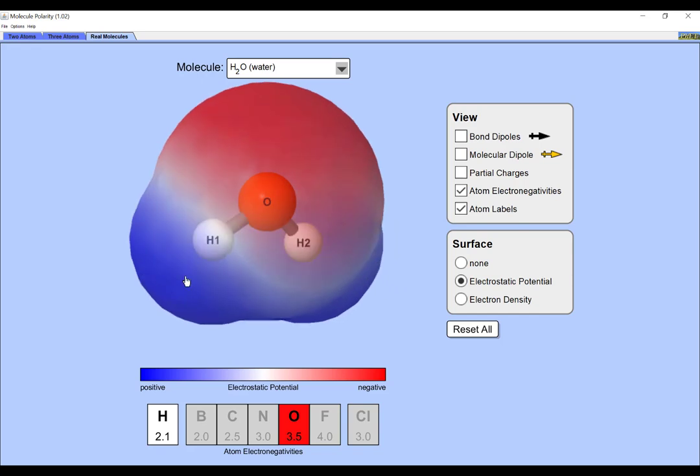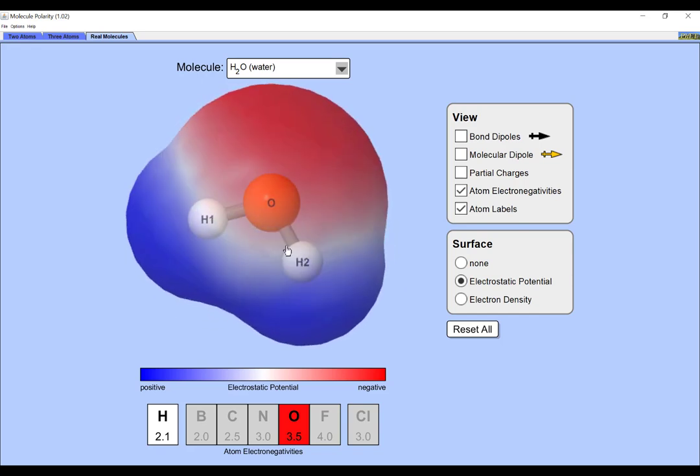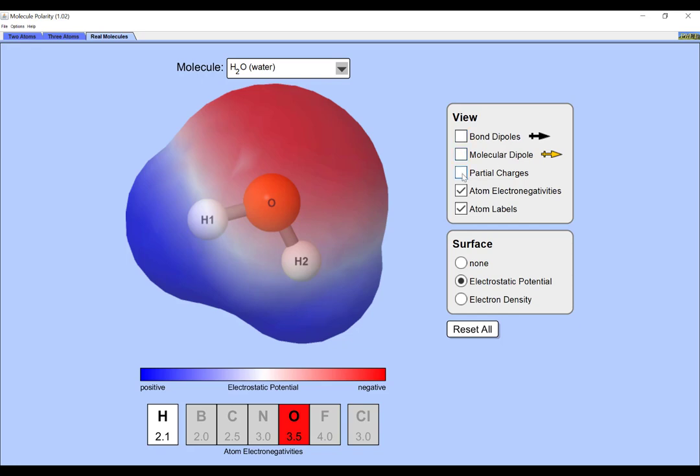Because electrons are negatively charged, the oxygen itself effectively takes on a slight negative charge. While the hydrogens, which are a bit electron deficient, because the electrons keep zipping off to spend time with the very attractive oxygen, have a slight positive charge.